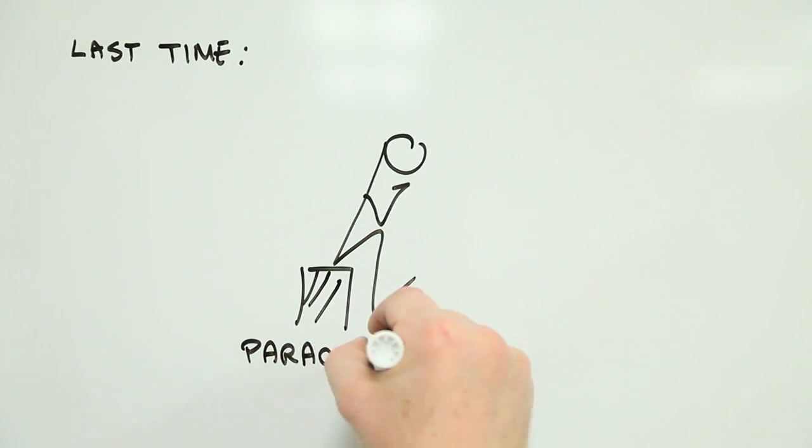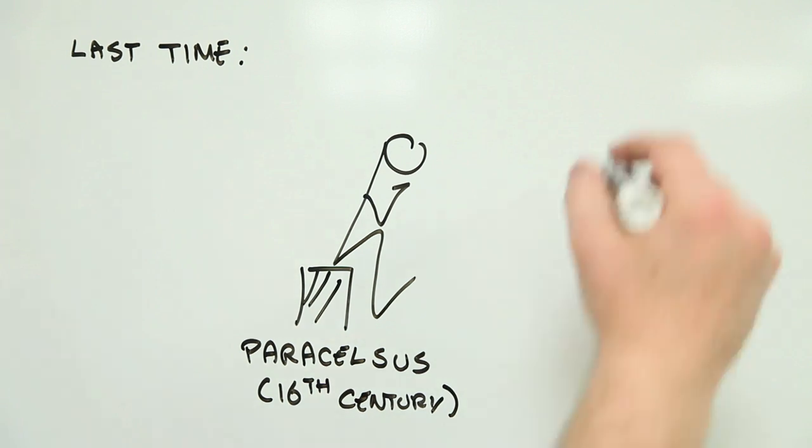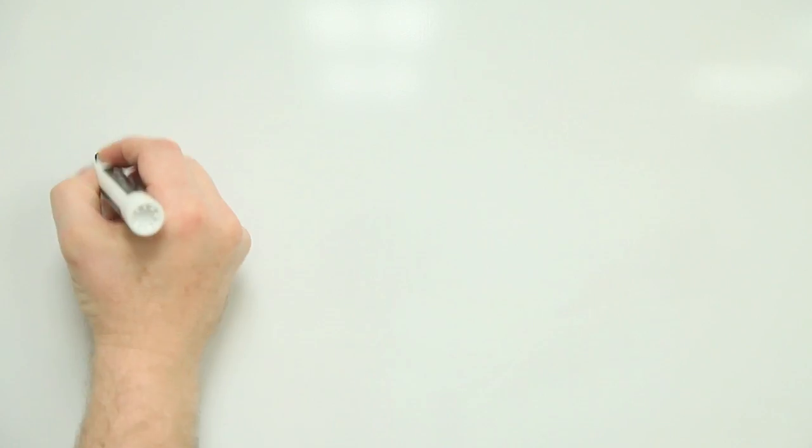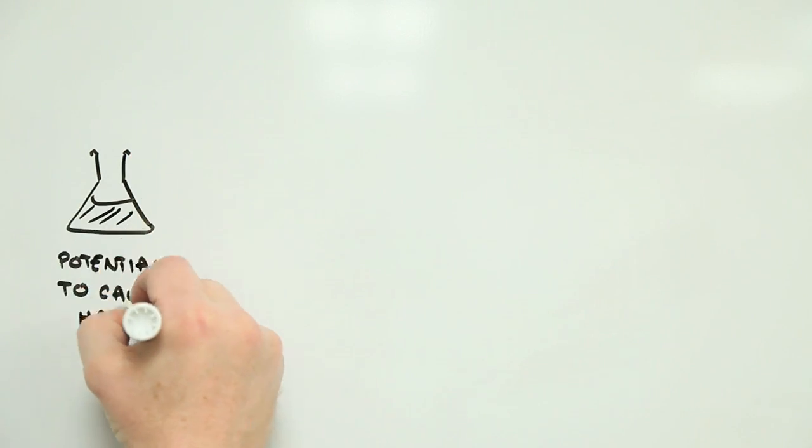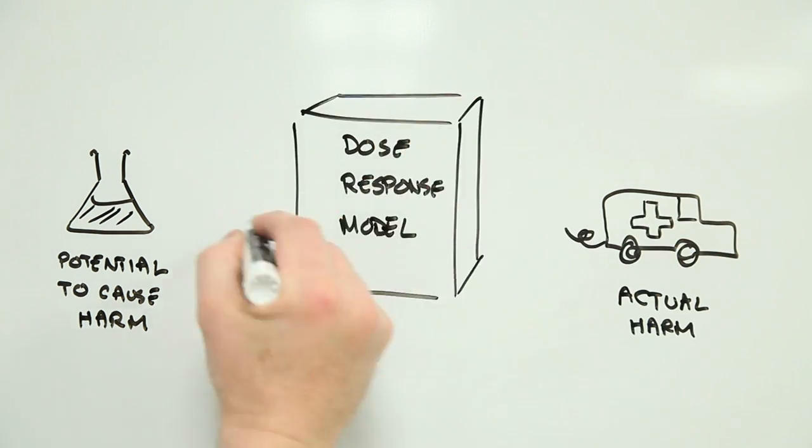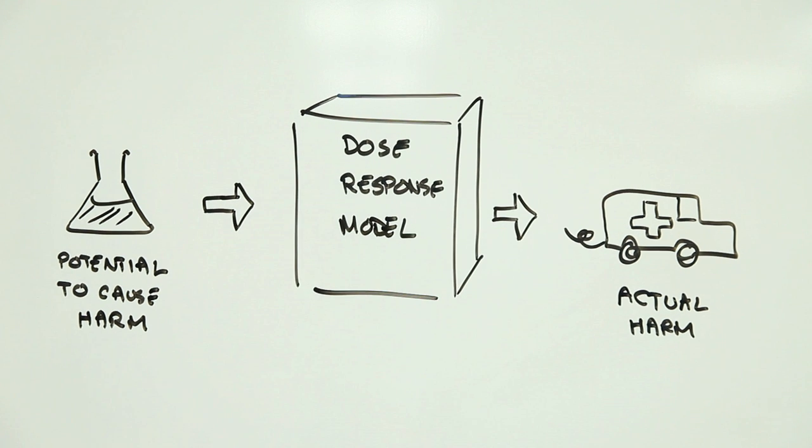Previously, Risk Bites covered the basics of dose response and how this helps translate what we know about the potential for something to cause harm to the probability of harm occurring. In a couple of weeks we'll be looking more closely at dose-response relationships, but in between we need to say a few things about models.